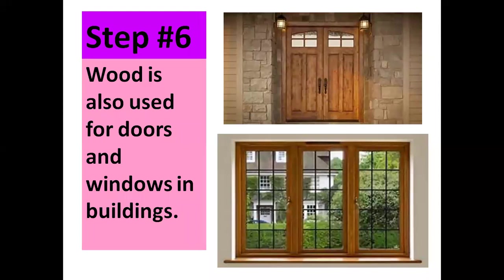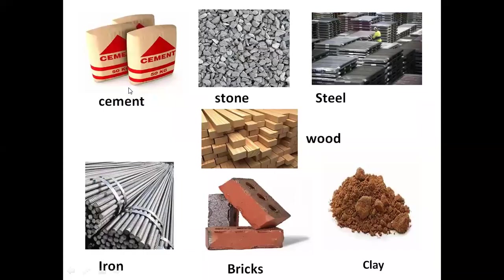Step number six: wood is also used for doors and windows in buildings. These are the names of some materials: cement, stone, steel, wood, bricks, clay, and iron.